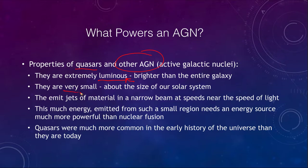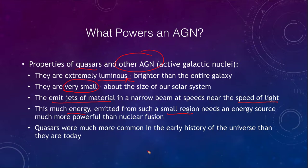We know that they are very small, about the size of our solar system, so they have to be extremely compact. They emit jets of material in narrow beams that are very close to the speed of light — another feature that requires a very high energy source.